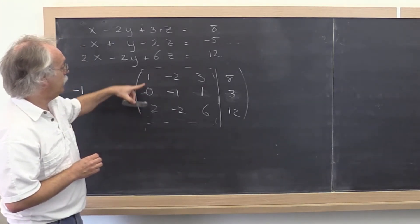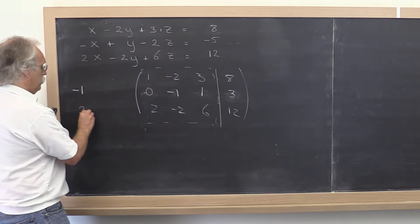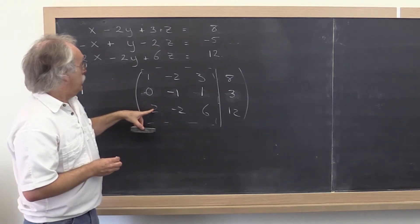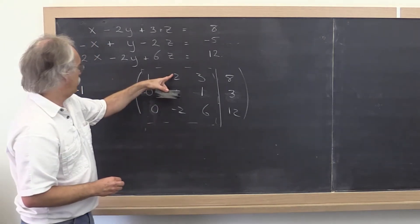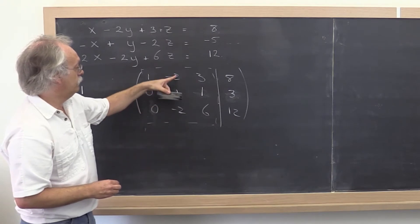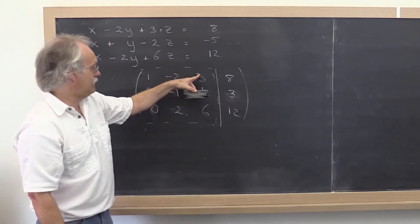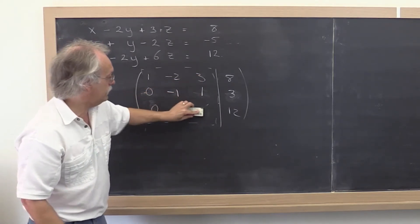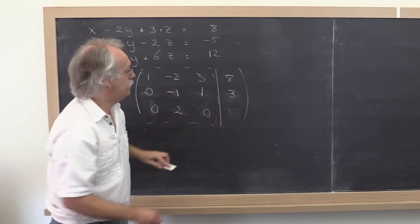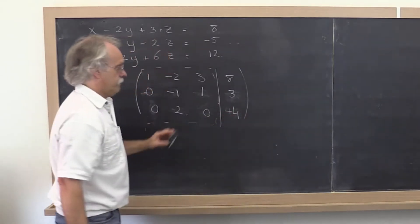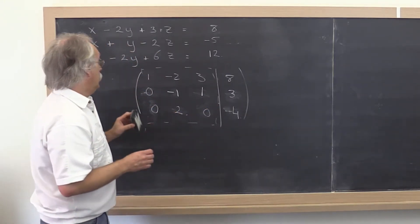Then we need to take 2 times the first row and subtract it off of the last row. So we'll write down a 2 here. And what? Well, that becomes a 0. 2 times that subtracted from that means that this becomes a 2. 2 times that subtracted from that becomes a 0. 2 times that subtracted from that becomes a minus 4.